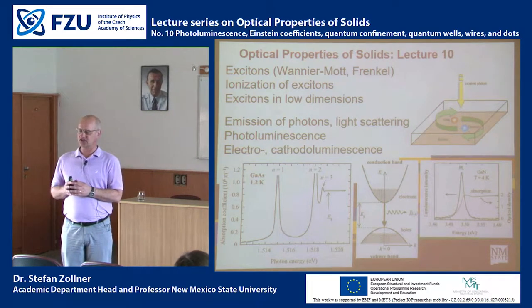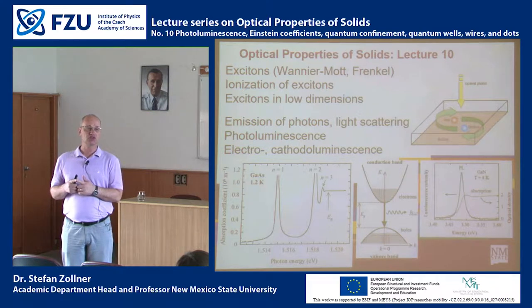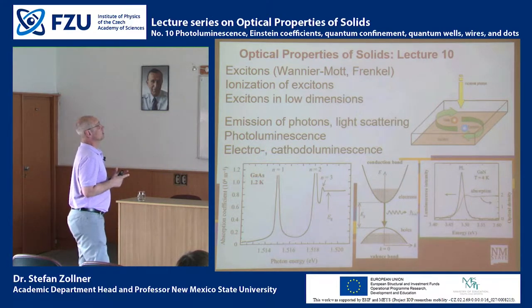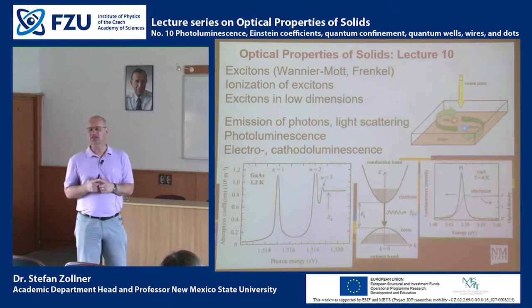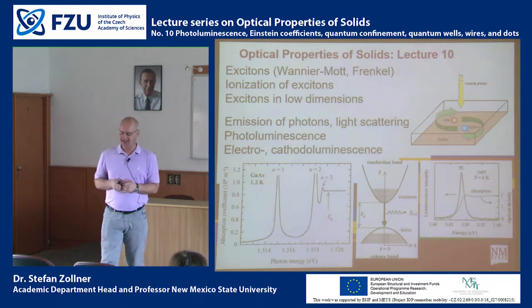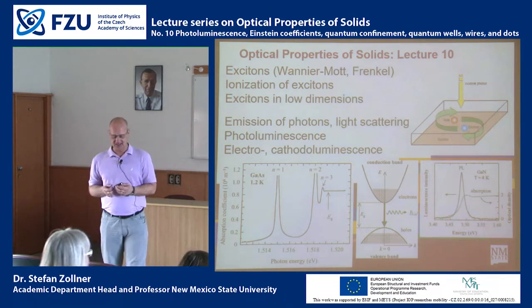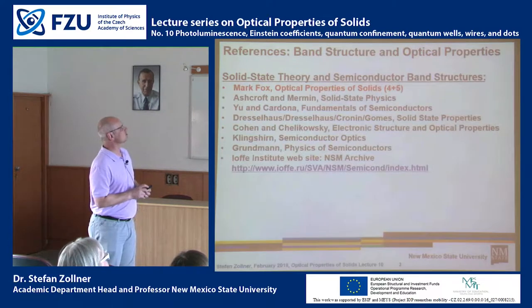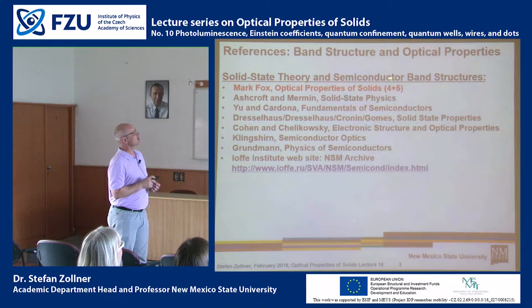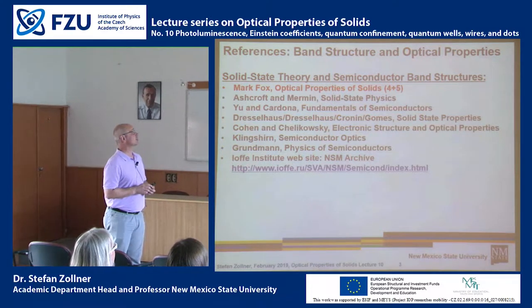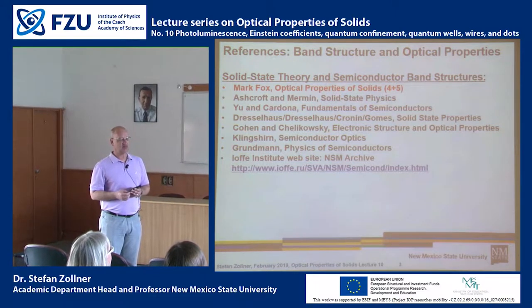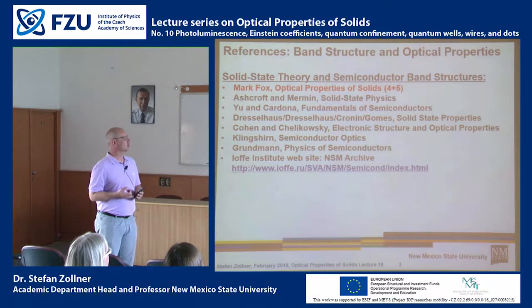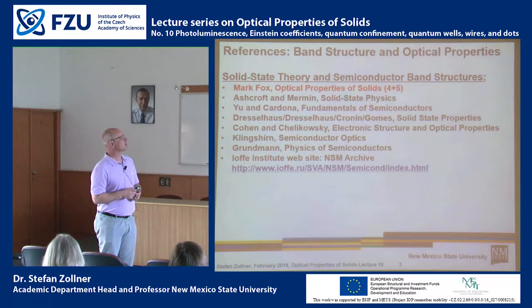What we covered the last few lectures: there was a lecture on band structure, followed by a lecture on direct absorption from direct transitions, and then we talked about absorption from indirect transitions. Today we'll talk about two topics: first, excitons, and then emission spectroscopies. This lecture is taken almost entirely from chapters 4 and 5 in the book by Mark Fox, supplemented with original figures from journal articles.